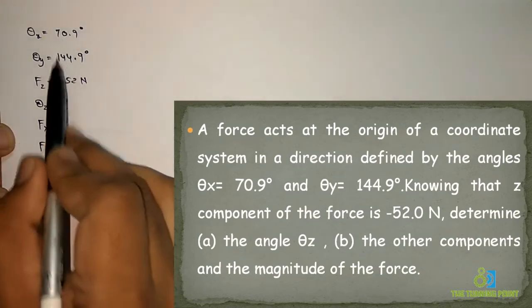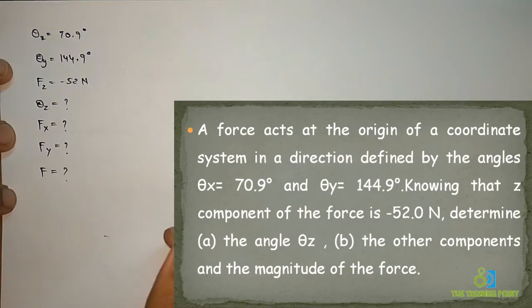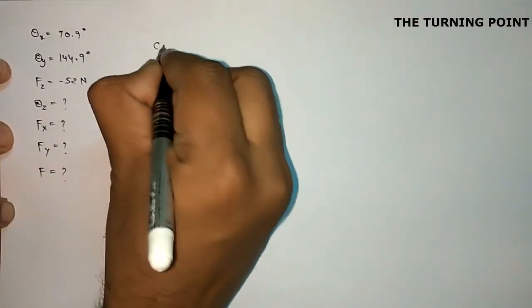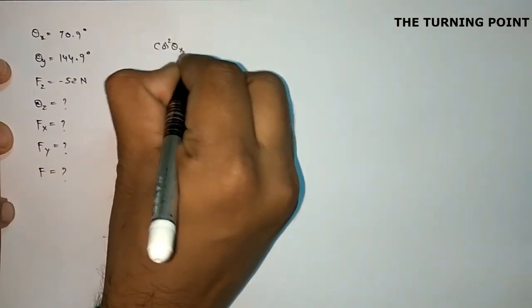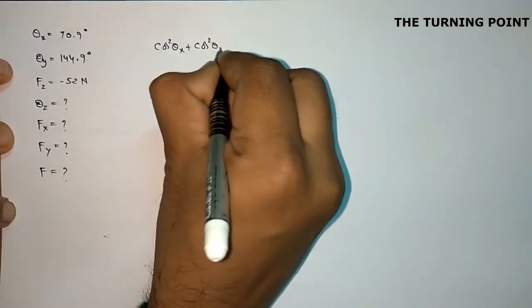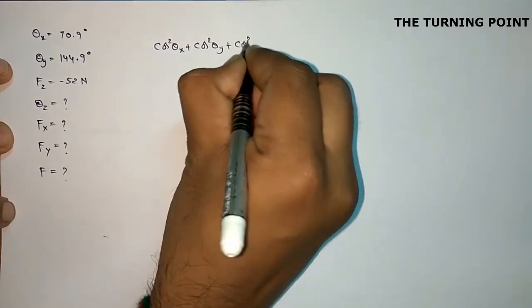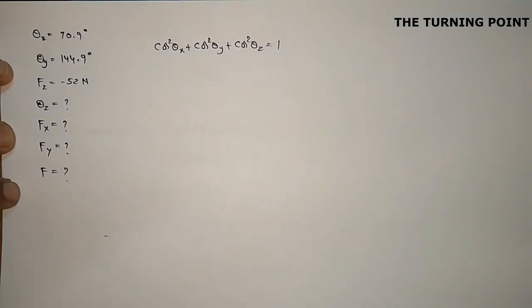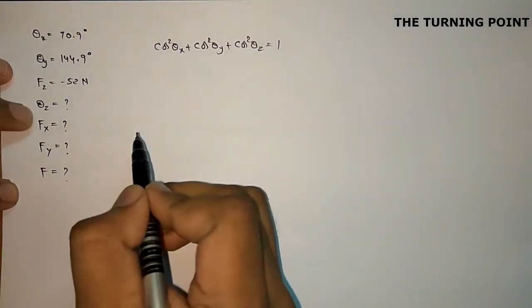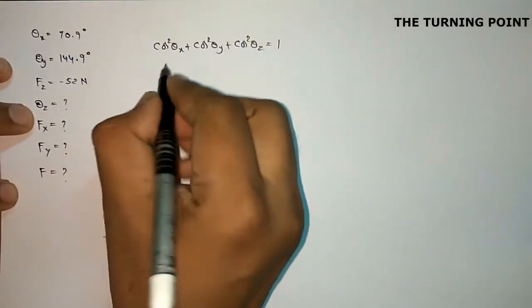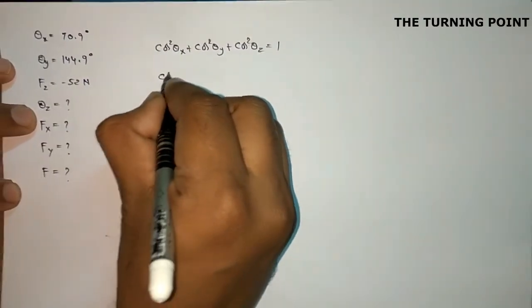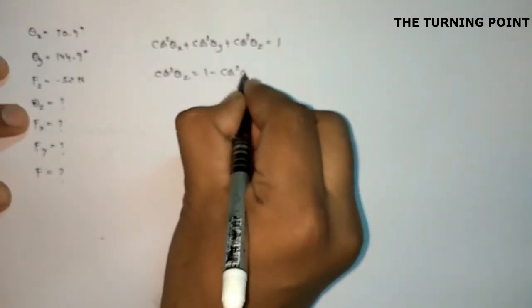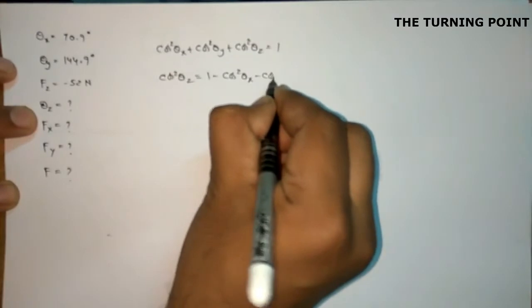Two angles are given and we have to find the third angle. For this, we can use the relation between direction cosines, which is: cos² theta x + cos² theta y + cos² theta z = 1. Rearranging, cos² theta z = 1 minus cos² theta x minus cos² theta y.